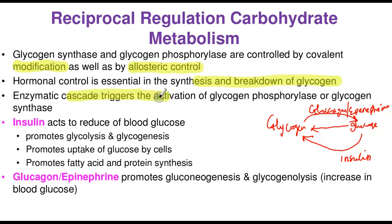This enzymatic cascade leads to activation of either glycogen phosphorylase or glycogen synthase, and the two are reciprocal: if glycogen phosphorylase is activated, glycogen synthase is inactivated, and vice versa. That is the reciprocal regulation in carbohydrate metabolism.